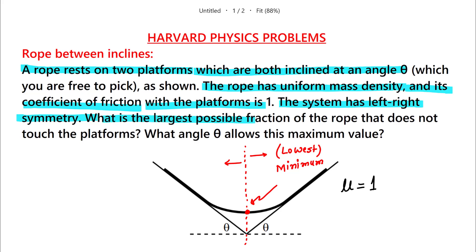Now, what is the largest possible fraction of the rope that does not touch the platform? The rope has two components: one resting on the platform and another hanging in the air. We have to find what fraction hangs in the air, and what angle theta allows this maximum value.